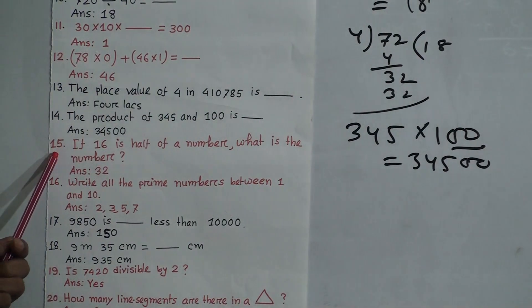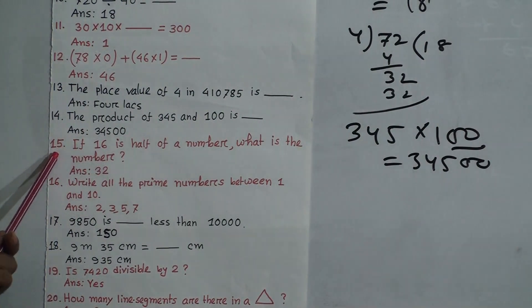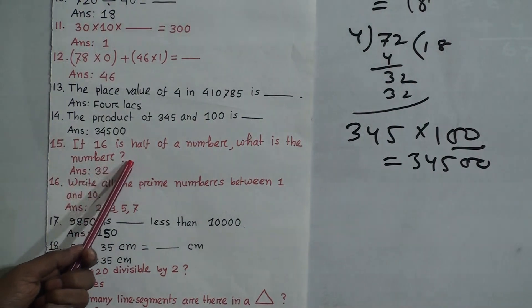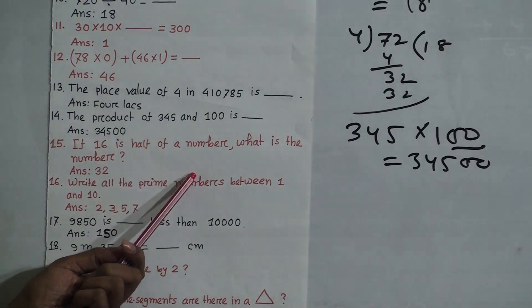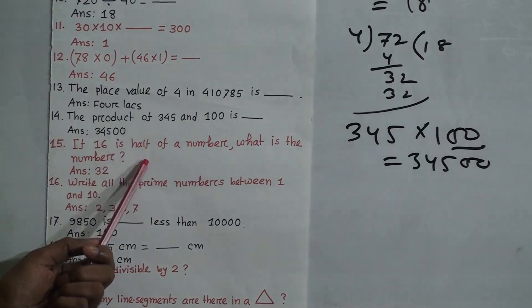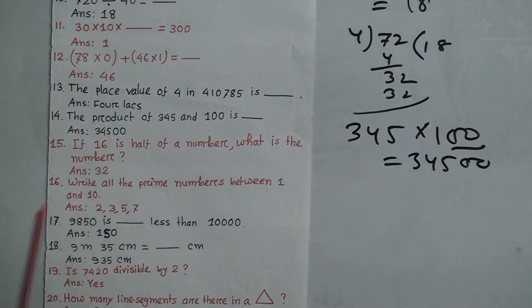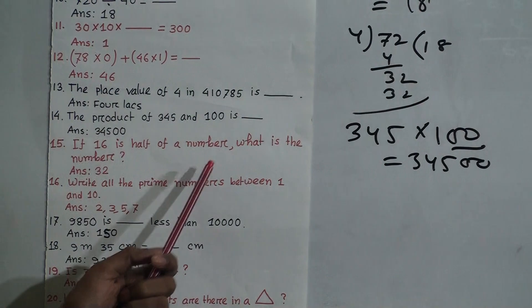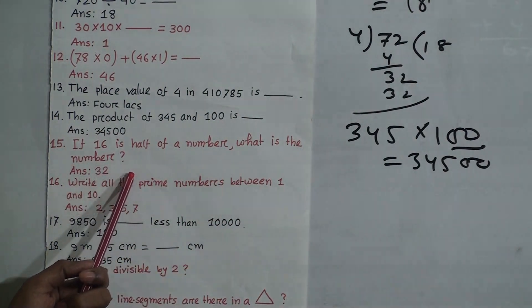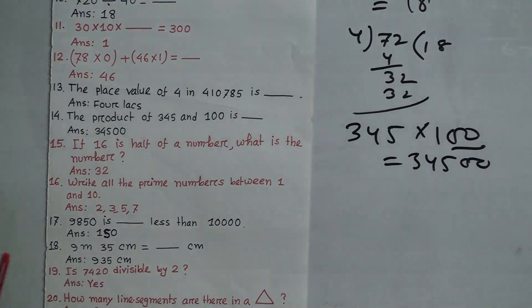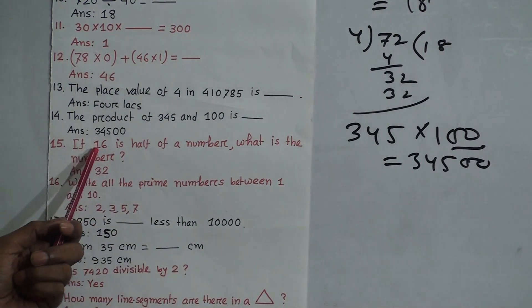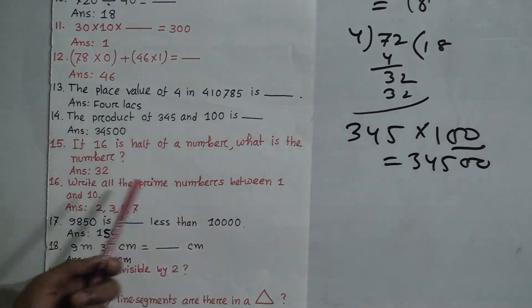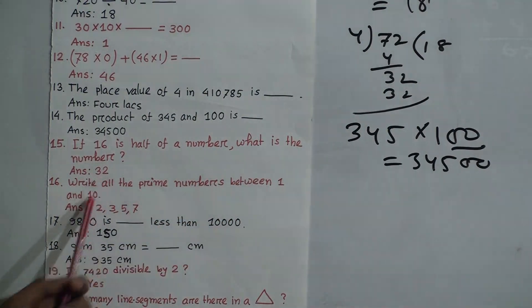Question 15: If 16 is half of a number, what is the number? This is a little IQ question. If 16 is half of a number, then the number must be 32, because half of 32 equals 16. So our answer is 32.